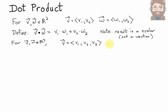In this case, I'll say vector V has components V1, V2, and V3. Vector W has components W1, W2, W3.